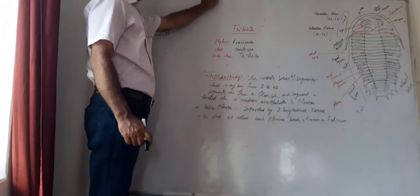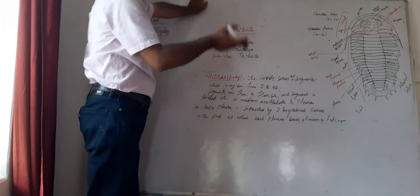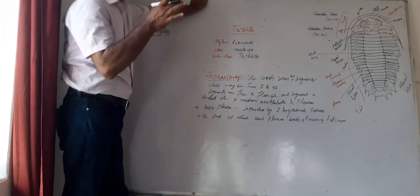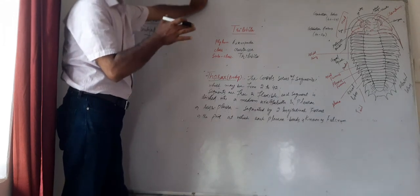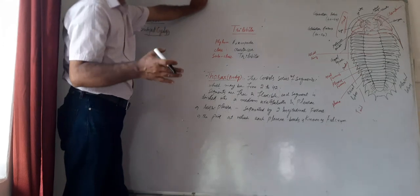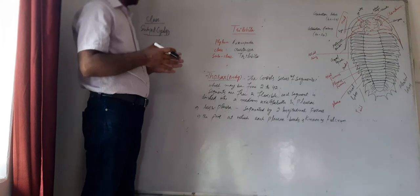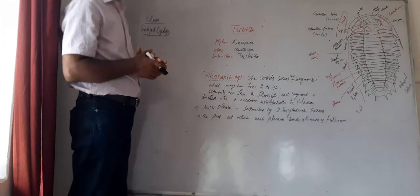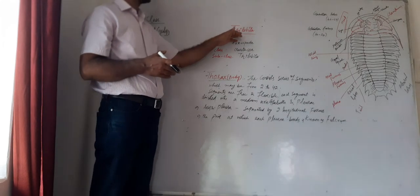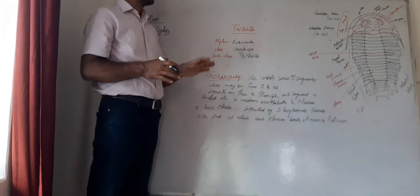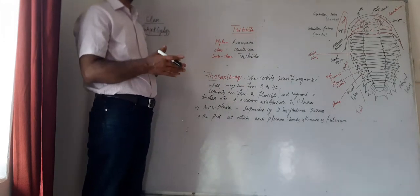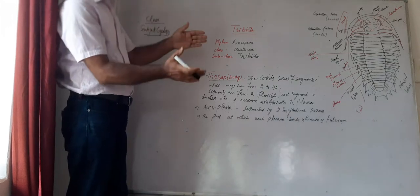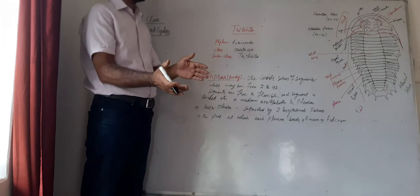Today's class continues on trilobites. In the previous class we learned about the head part, known as the Cephalon. Today we will try to know the thorax or body part. As already mentioned, 'tri' means three, 'lobe' means lobes, and 'bite' means pieces. Trilobites are divided into three parts: number one is the head or Cephalon, second is the body or thorax, and the third is the tail or Pygidium.